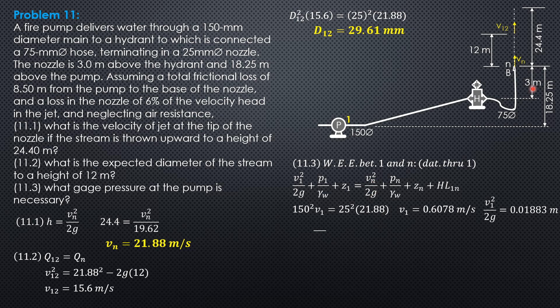Then everything is here. Vn squared over 2g, the head at the nozzle, is 24.4 meters. Substitute 0.01883 plus pressure over 9.81 plus 0 equals 24.4 plus pressure head at n, 0, exposed to atmosphere. Zn is 18.25 meters. Head loss from 1 to n is the frictional loss from 1 to the base of the nozzle, 8.5, then plus 6% head loss in the nozzle of the velocity head. That's why we have here 0.06 of velocity head in the nozzle, which is 24.4.